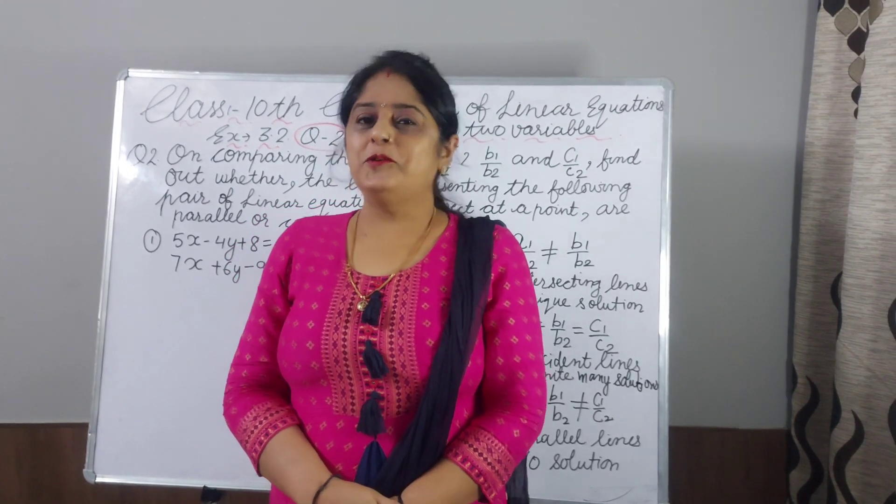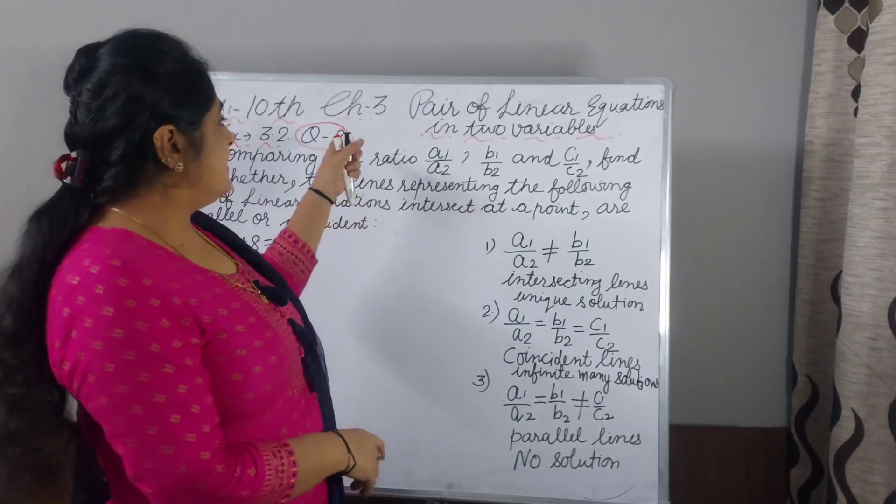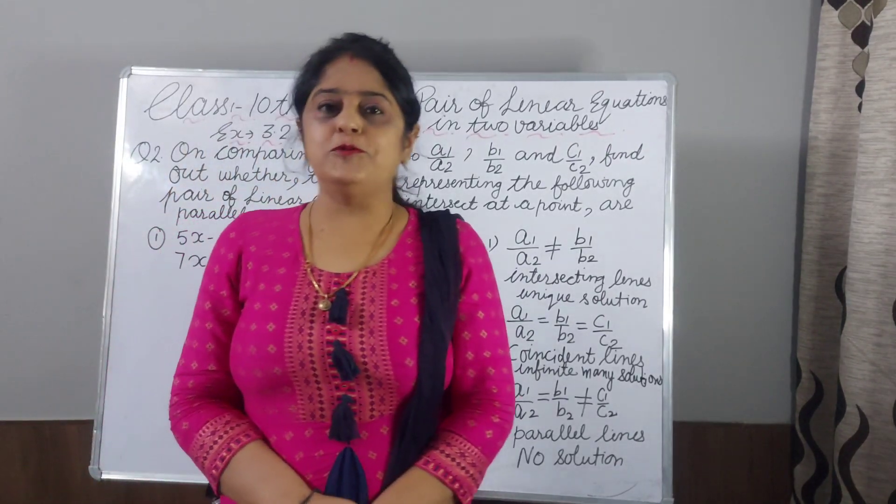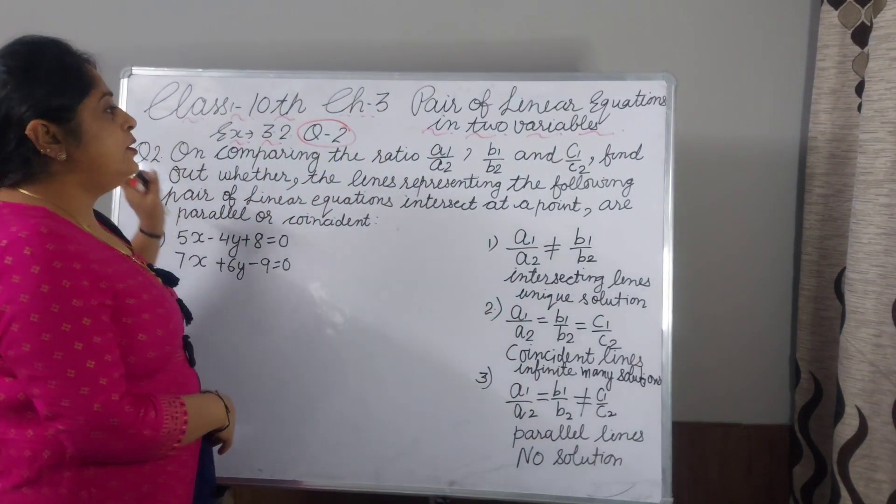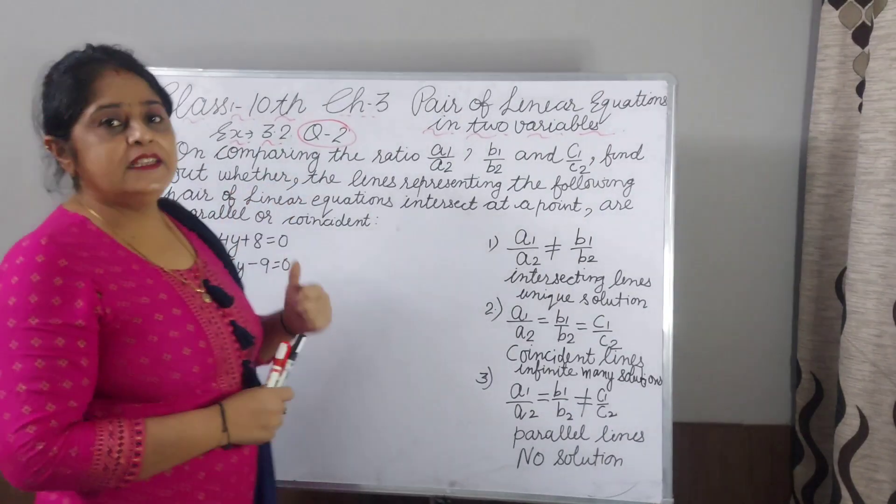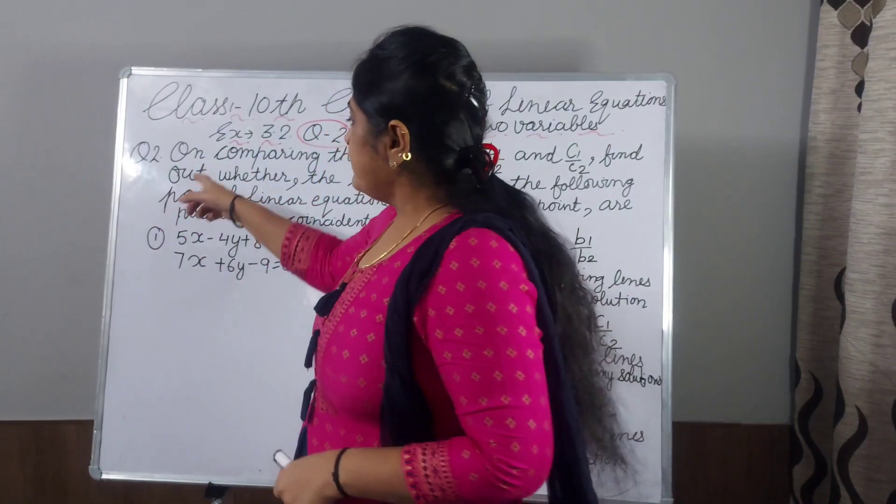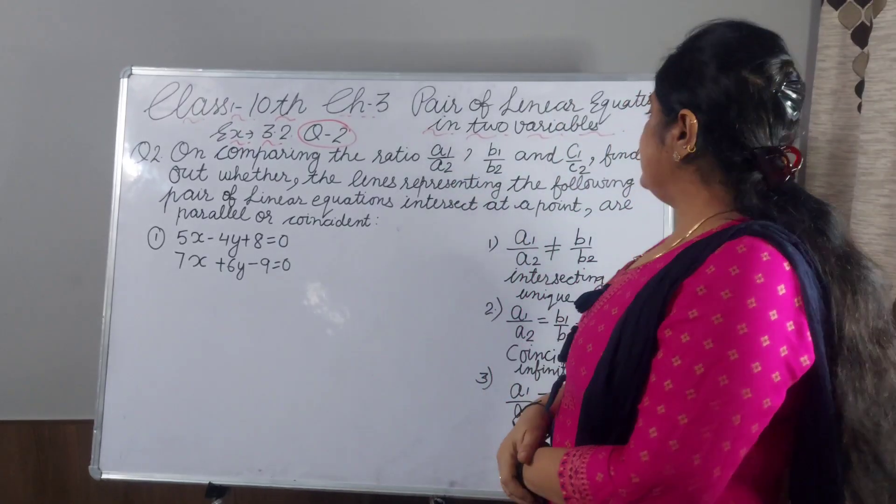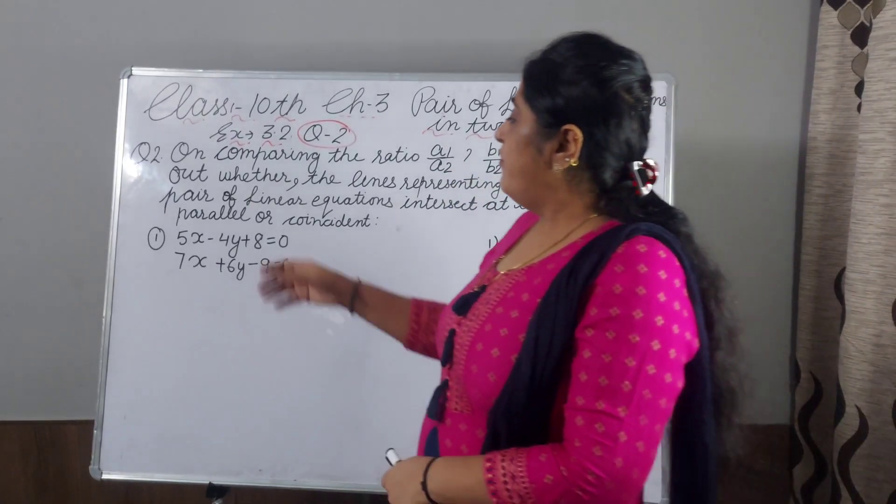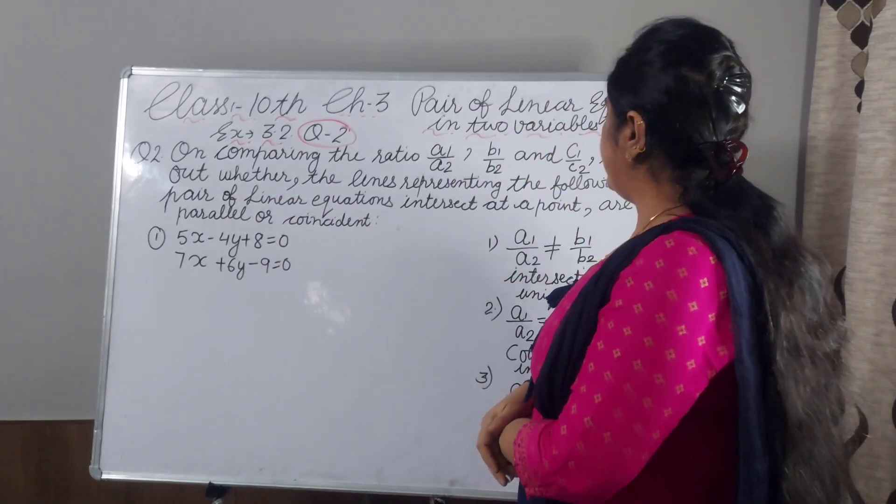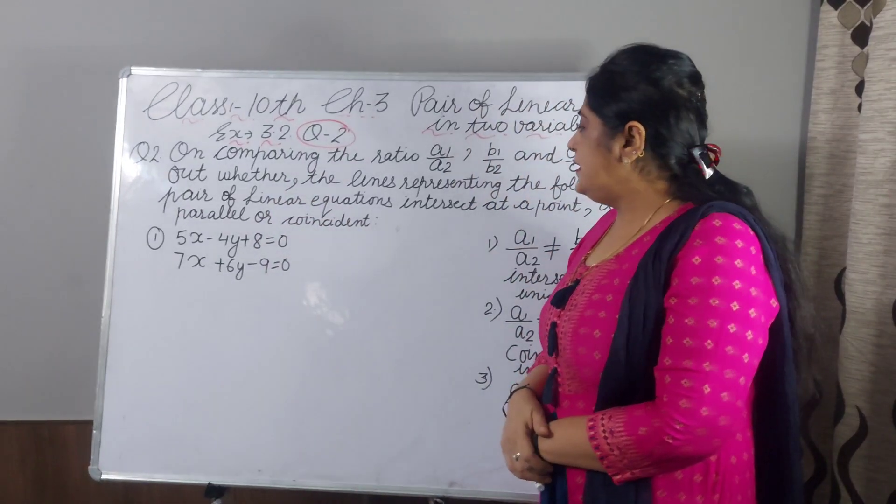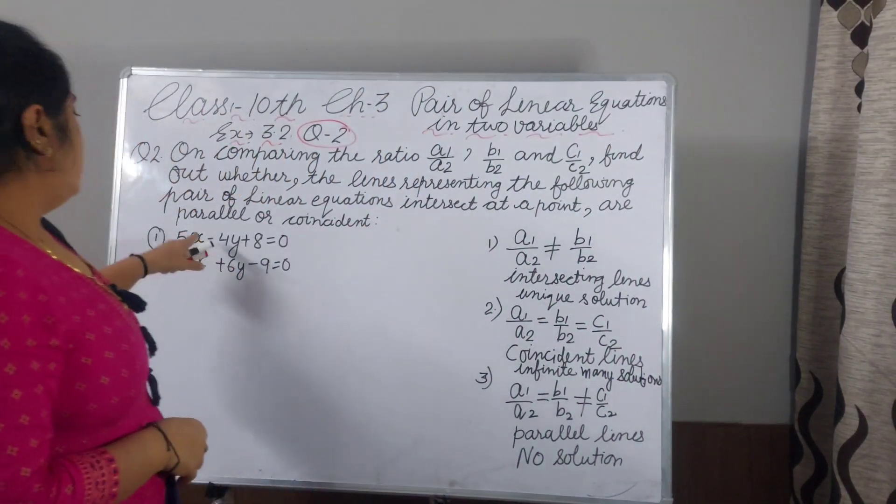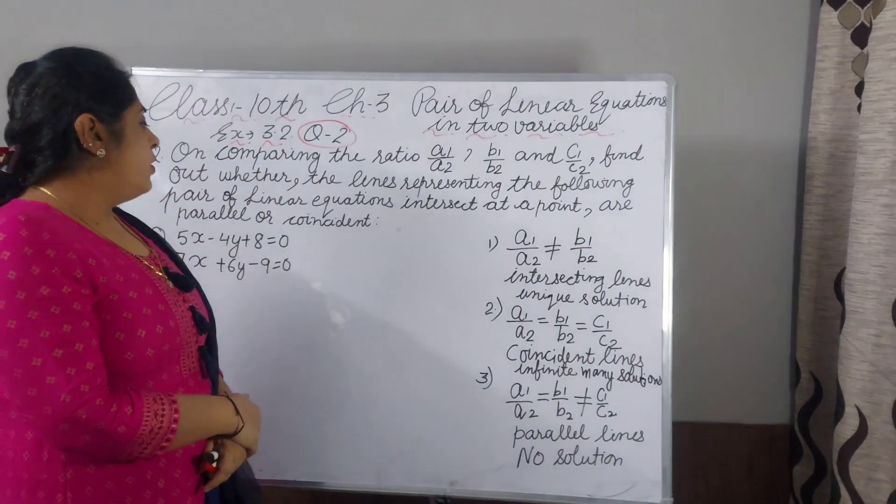Hello everyone, today I will explain for class 10, chapter 3, exercise 3.2 and question number 2. First, I will read the statement: on comparing the ratio A1 by A2, B1 by B2 and C1 by C2, find whether the lines representing the following pair of linear equations intersect at a point or are parallel or are coincident.